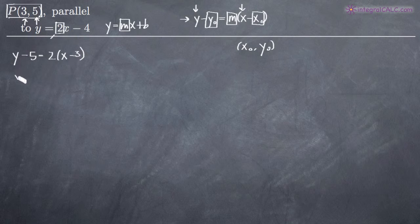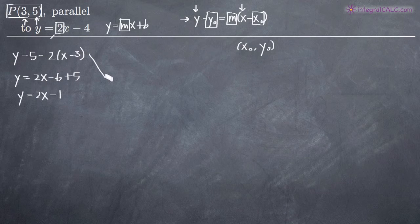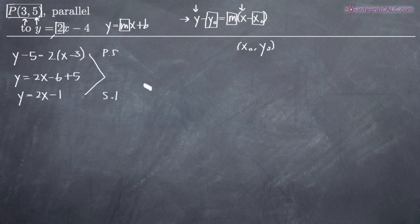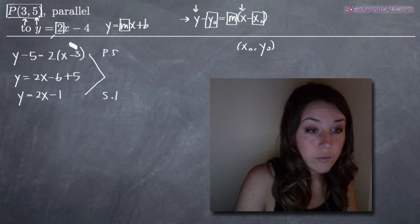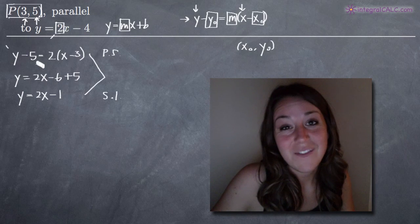Quickly, if we wanted to write it in slope-intercept form, we would add 5 to both sides. We multiply out to get 2x minus 6, then adding 5 to both sides gives us y equals 2x minus 1, since negative 6 plus 5 is negative 1. So these two equations are the same — one is point-slope and one is slope-intercept. But we're looking for point-slope form, so that's our answer. I hope this video helped and I'll see you in the next one.